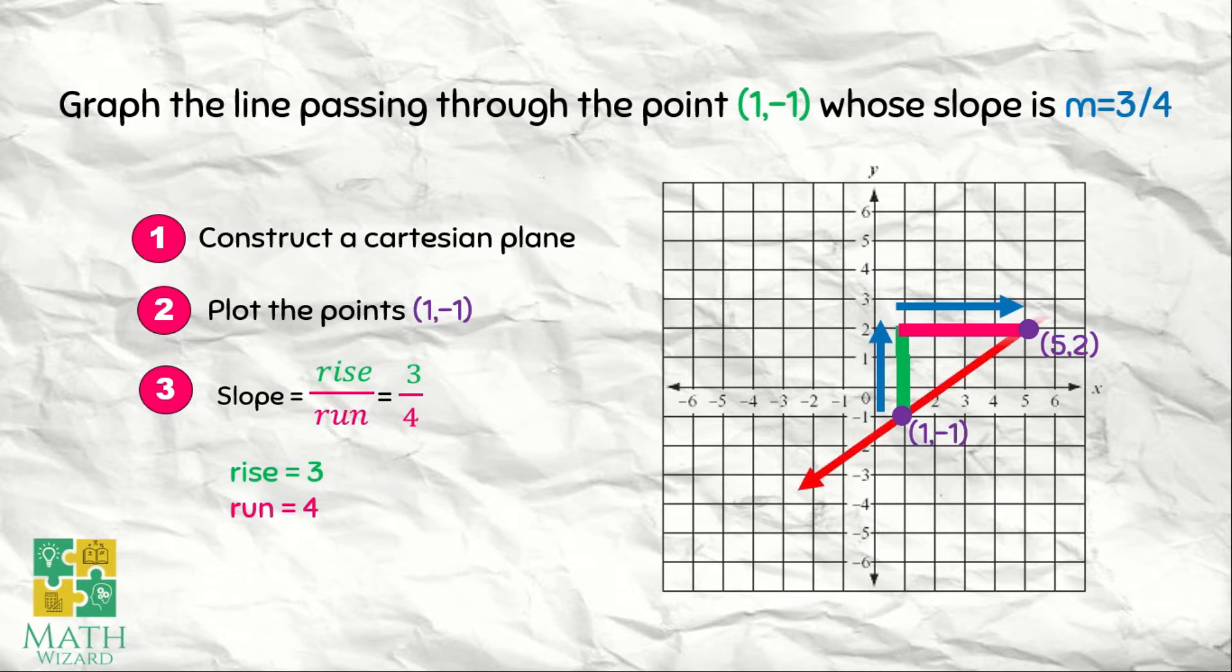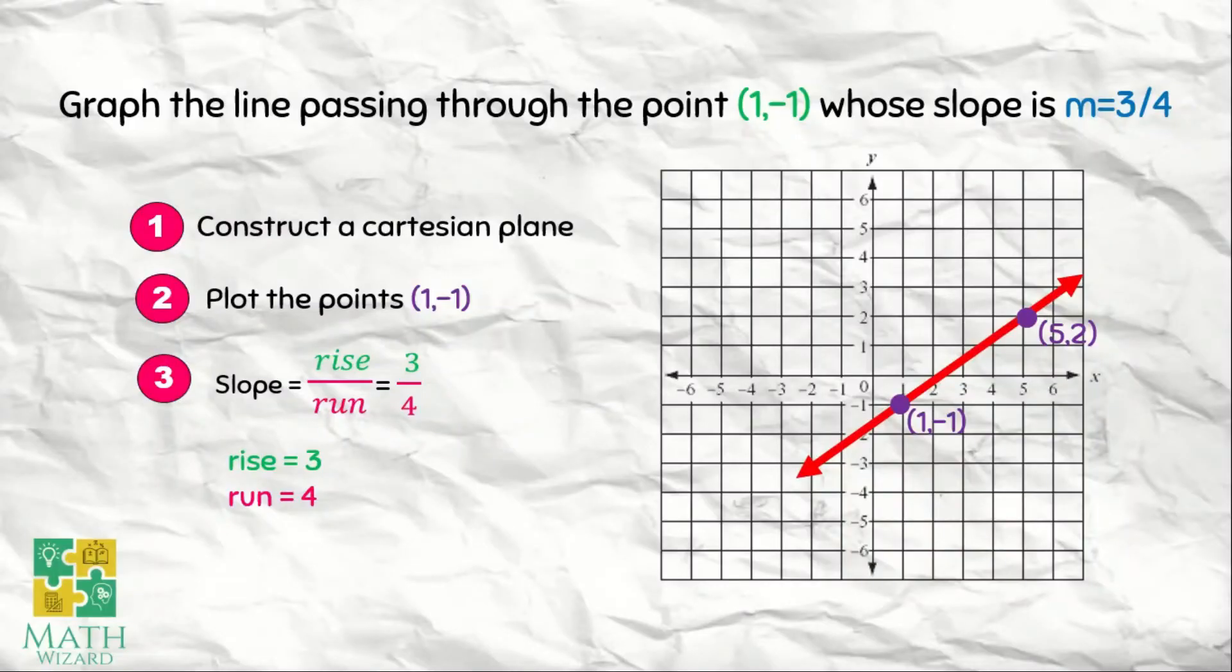Next is we connect the two dots. And we have this graph. So the graph of the line passing through the point (1, -1) at ang slope niya ay m = 3/4 is this one.